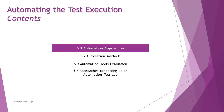As part of this chapter you will be covering several topics: 5.1 automation approaches, 5.2 automation methods, 5.3 automation test tool evaluations, and 5.4 approaches for setting up an automation test lab for mobile application testing. We are getting started with 5.1, which is about automation approaches.